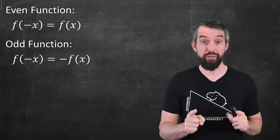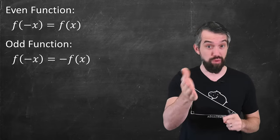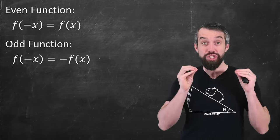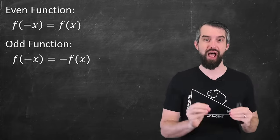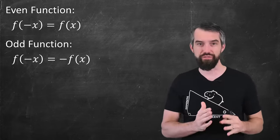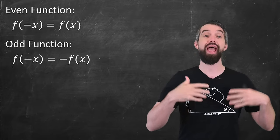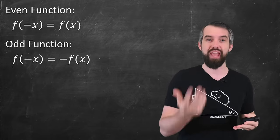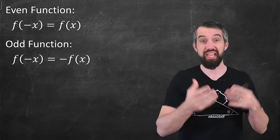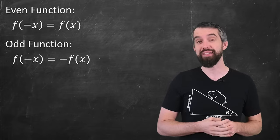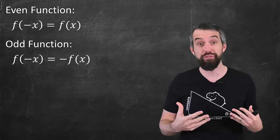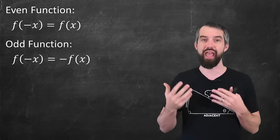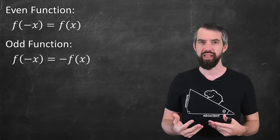I'm going to connect this to hyperbolic functions in just a moment, but I want to first define what even and odd functions are in general. An even function is one where f of negative x is the same thing as f of x, and an odd function is one where f of negative x is the negative of f of x.